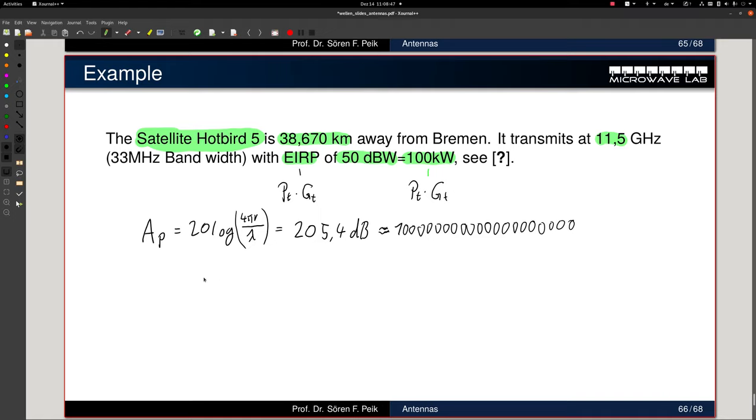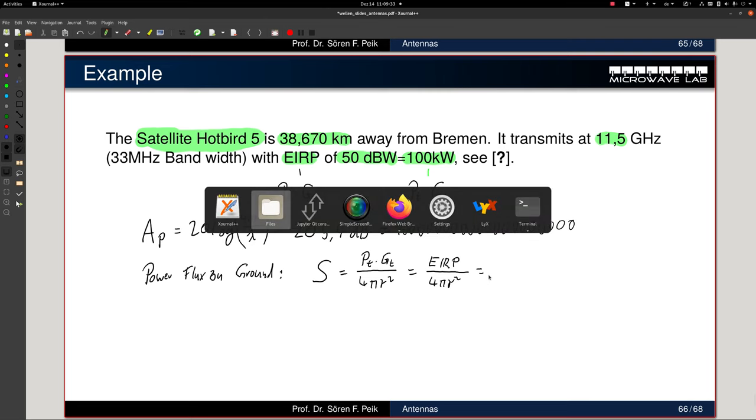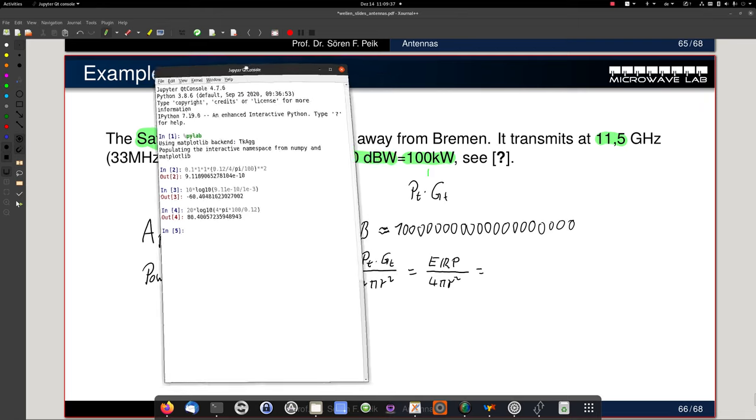And we can now calculate our power flux density on the ground. S. And remember, S is P transmit times gain of the transmit antenna over 4 pi r square. Since we know that, it's Eirp over 4 pi r square. So with this known, we can calculate now the power flux density.